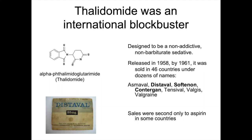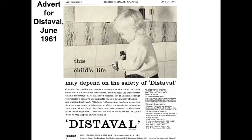By 1961 it was sold in 46 countries and sales were second only to aspirin in some countries — it was that popular. It was never called thalidomide on the market; it used different names. Distavel was the name in the United Kingdom. Contergan was the name in Germany, and there were lots of other names in different countries. It was also heavily advertised — this is an advert from the British Medical Journal in June 1961, five months before the drug was withdrawn.